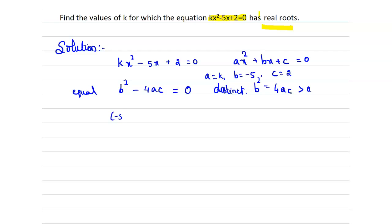Now substitute here: (-5)² - 4(k)(2) = 0. So 25 - 8k = 0 which implies 8k = 25, k = 25/8.